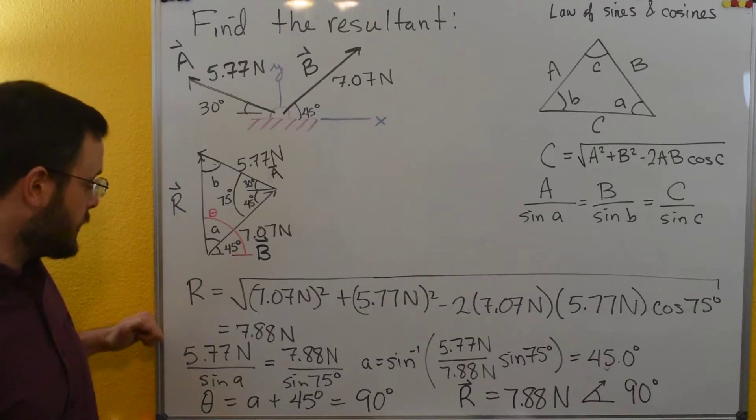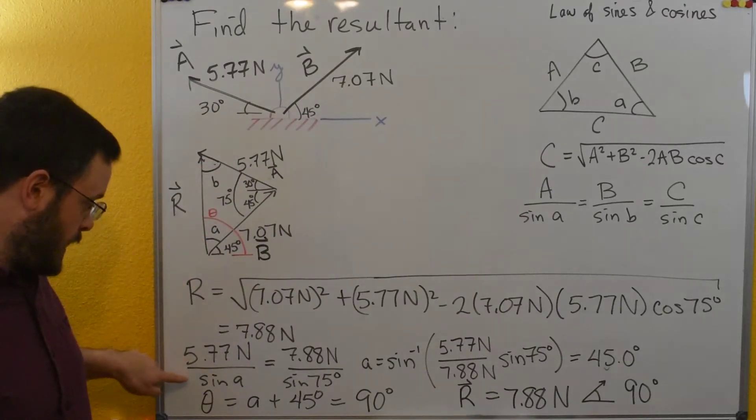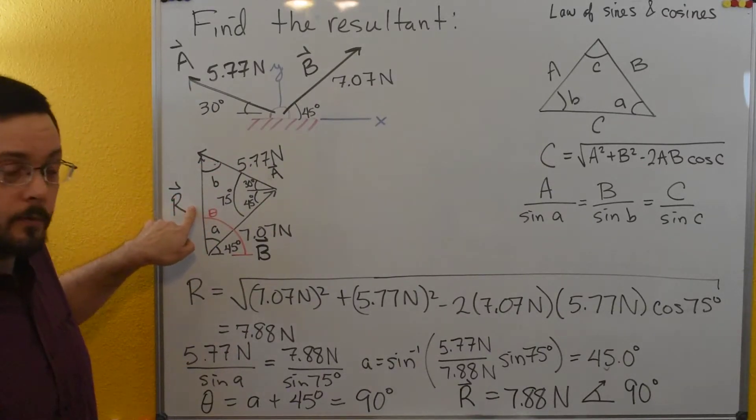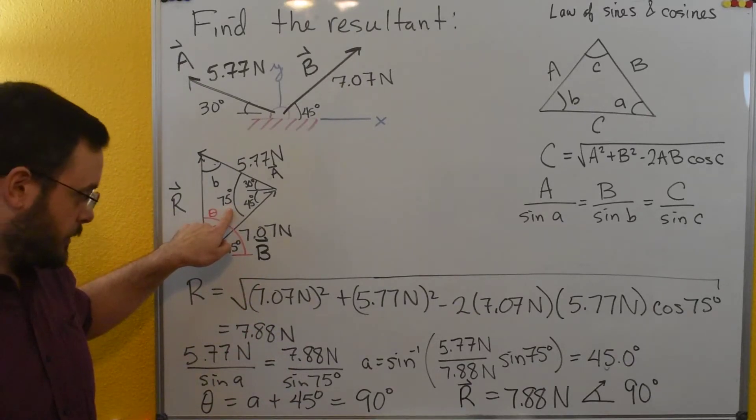Now I can apply law of sines. So I can do my 5.77 newtons divided by sine of a is equal to the resultant 7.88 newtons divided by sine of 75.